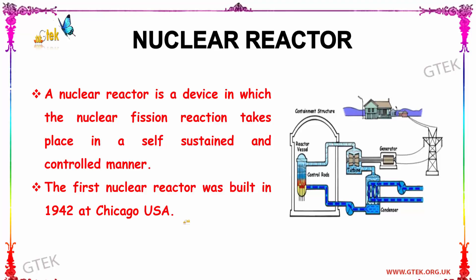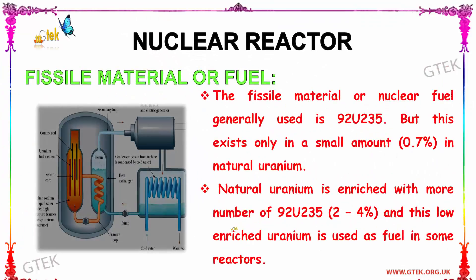The first nuclear reactor was built in 1942 at Chicago, USA. A nuclear reactor has parts such as condenser, control rods, reactor vessel, turbine, and generator. The fuel used in a nuclear reactor is called fissile material. The fissile material generally used is uranium-235, but it exists only in a small amount of about 0.7% in natural uranium.